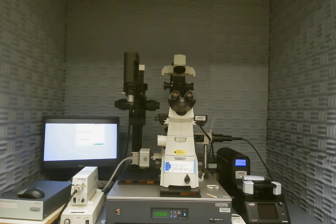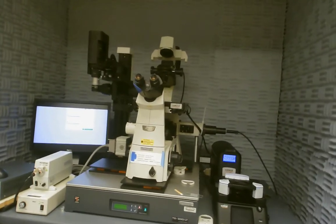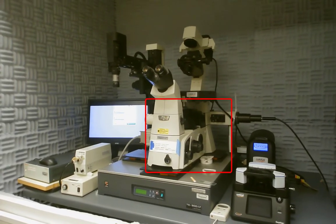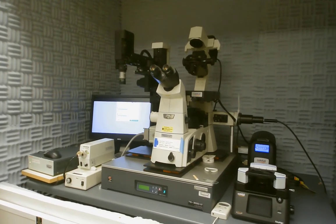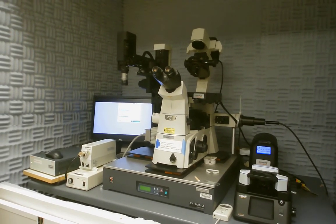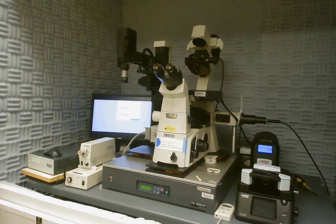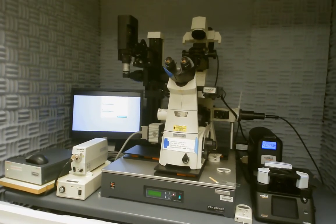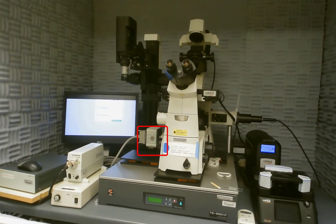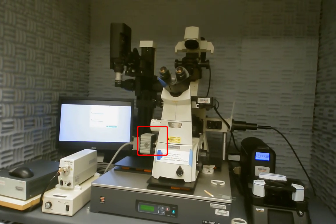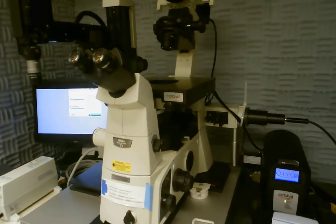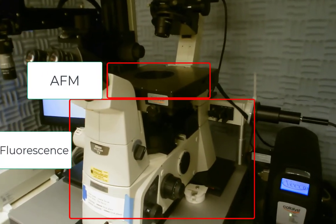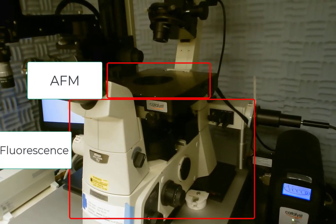This system is unique in that it is mounted on an inverted fluorescence microscope. So you can actually do individual or combination measurements of fluorescence microscopy, which has its own CCD camera down on the bottom left of the microscope. The AFM imaging takes place above. So the fluorescence takes place below and the AFM takes place on the top.